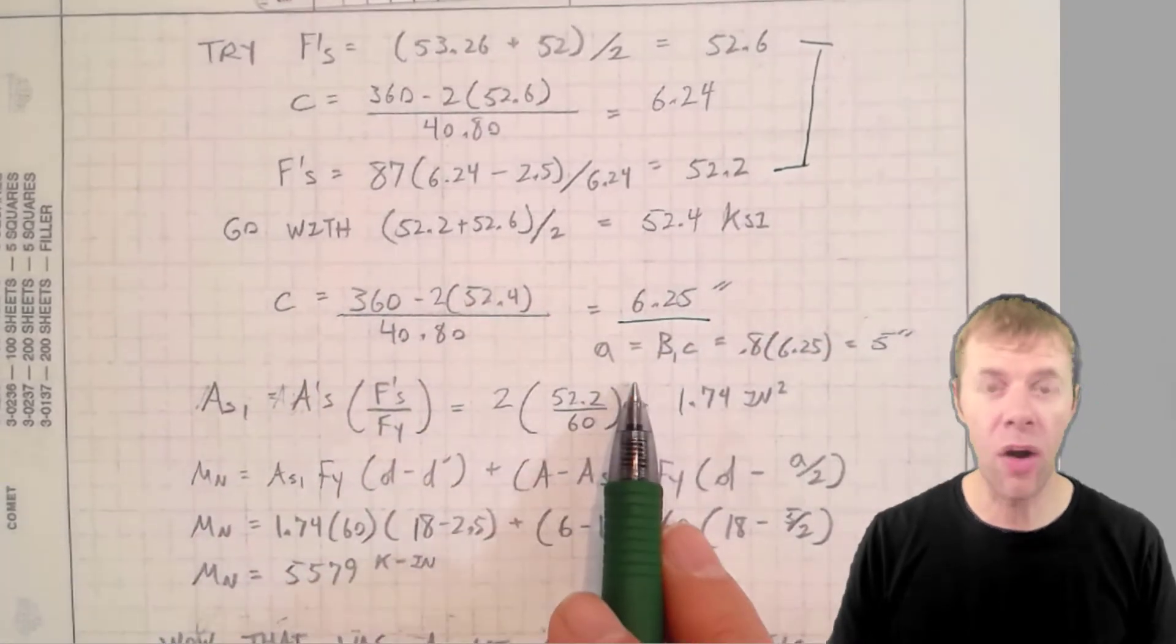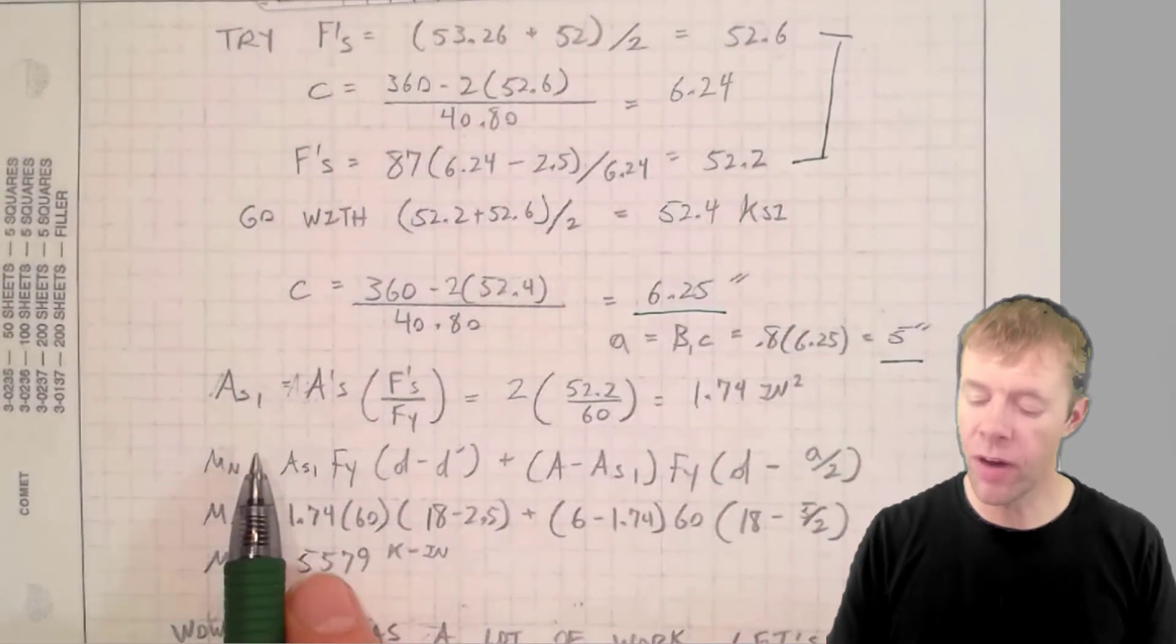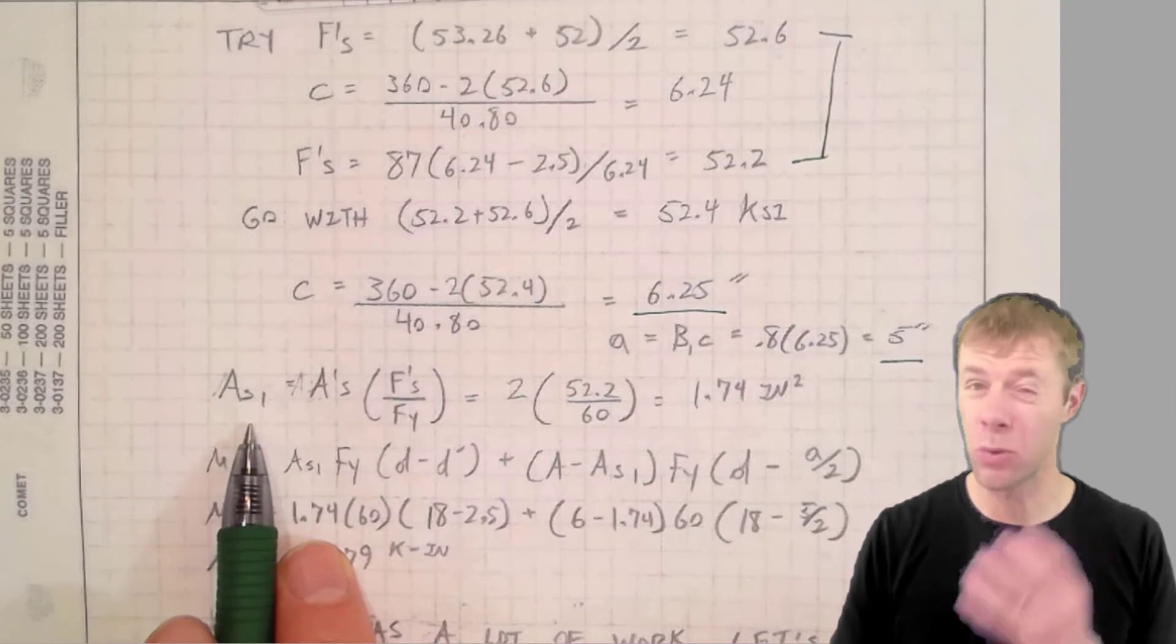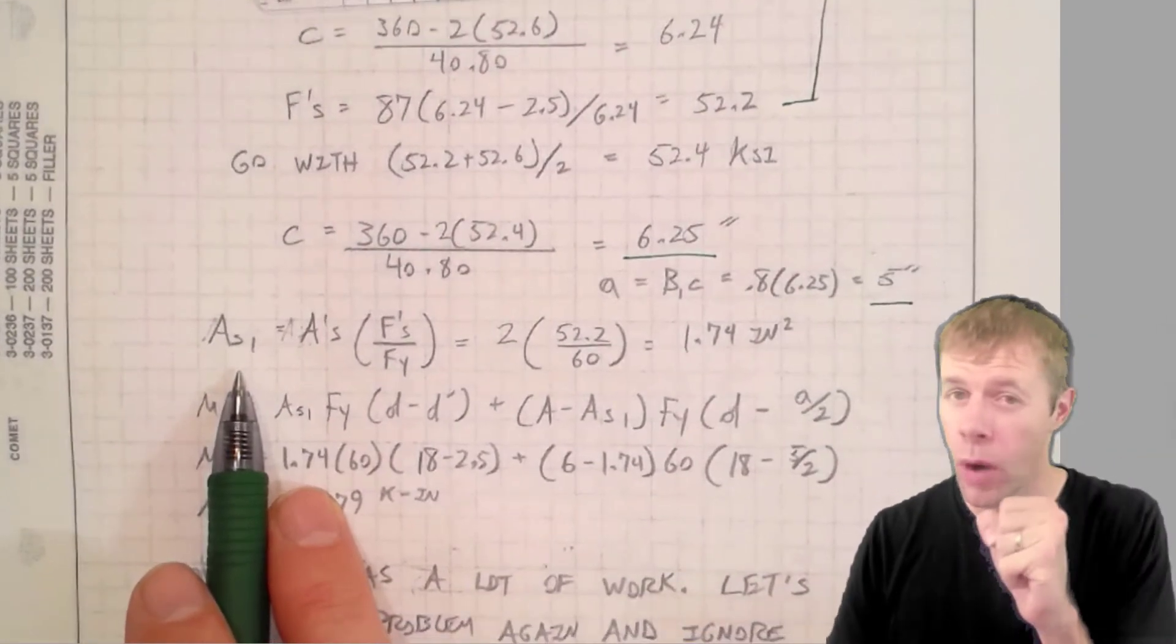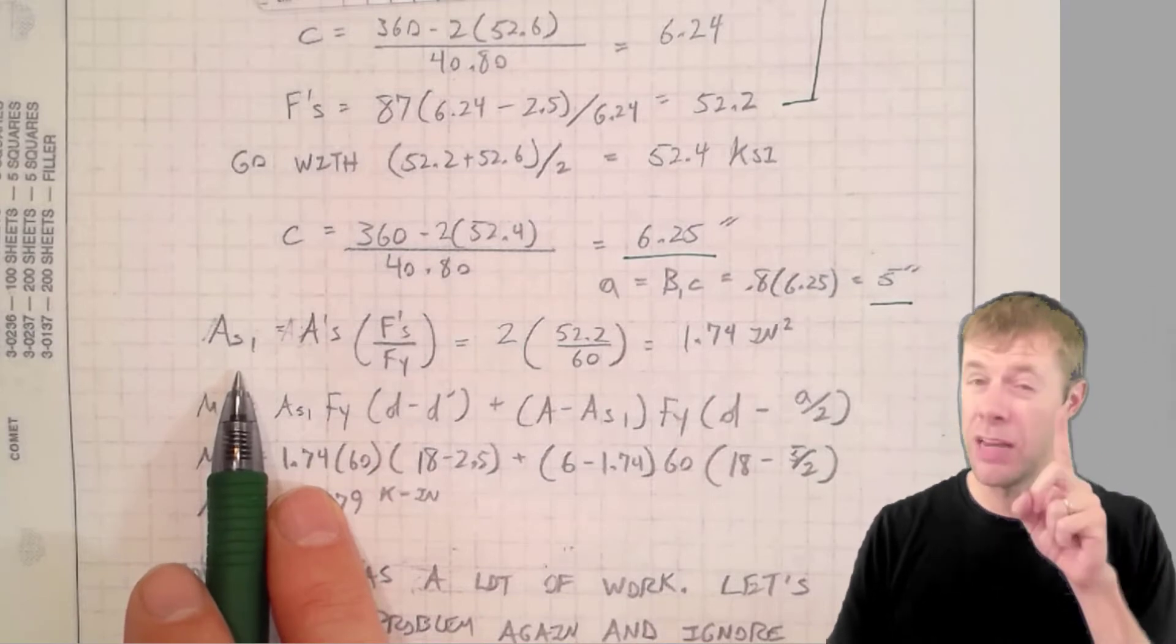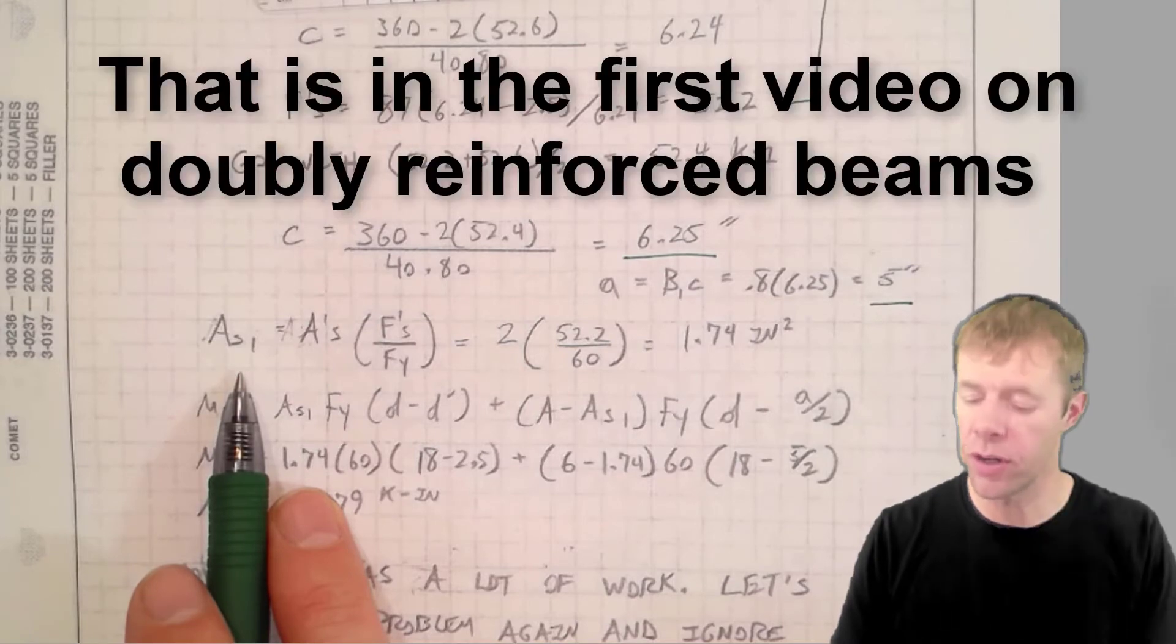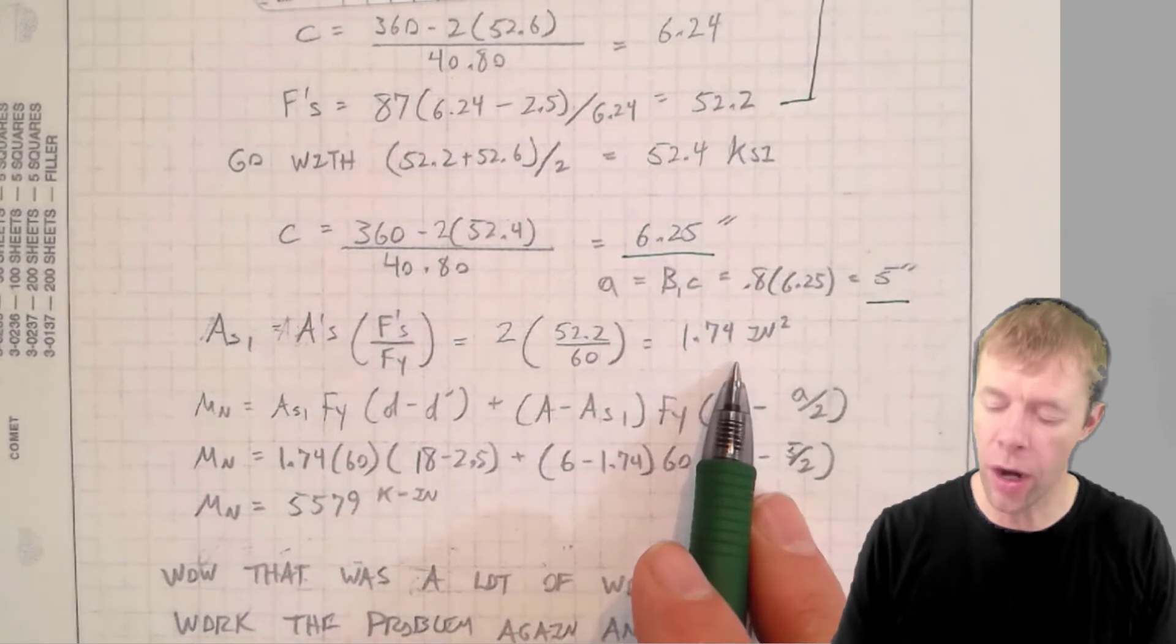Now we get to get our A, which is beta 1 times C is 5 inches. And now we start to plug in. We find our AS1. Remember, that's when we break up. That's the amount of steel we take out to balance the steel from the compression block. If you don't know what I'm talking about, then go back and look at the theory video. And I solve for my AS1 to be 1.74 inches squared.